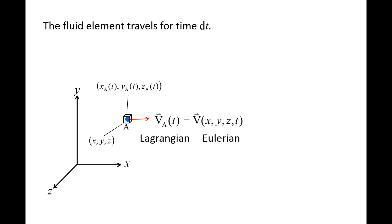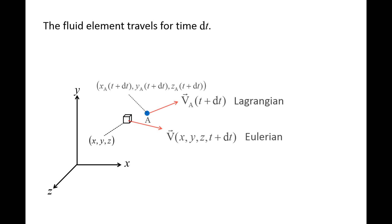A small amount of time dt passes and the fluid element's velocity changes. The velocity at the location previously occupied by the fluid element also changes. In the limit of dt becoming infinitesimally small, the change in the velocity of the fluid element from the Lagrangian point of view, dva, is equal to the change in velocity at the location occupied by the fluid element, dv.